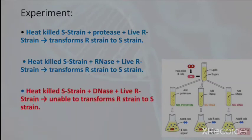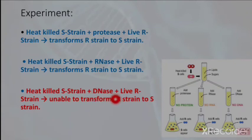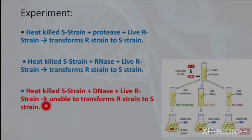The third step of the experiment was that they took heat-killed S strain and added DNase — the enzyme responsible for the digestion of DNA — along with live R strain. The result was that it was unable to transform R strain to S strain. The R strain did not transform into S strain.